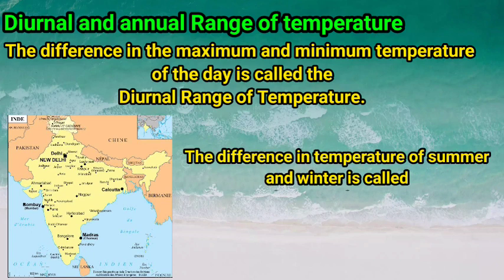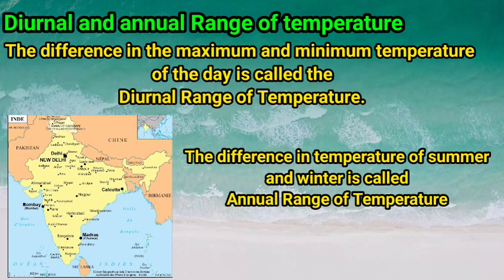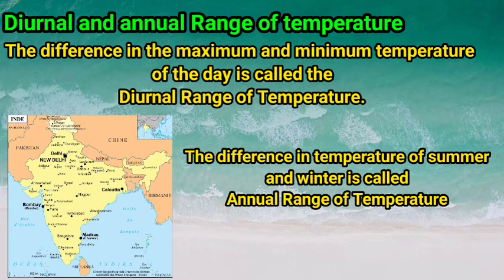The difference in the temperature of summer and winter is called the annual range of temperature. From this lesson, we learned how temperature is influenced by various factors, and therefore we get to see the diversity in temperature across various regions on the Earth. Thank you.